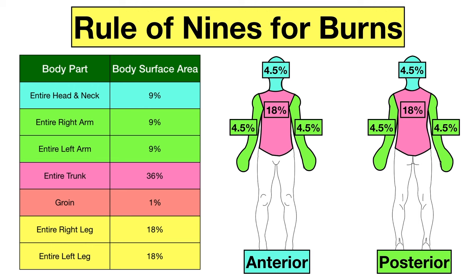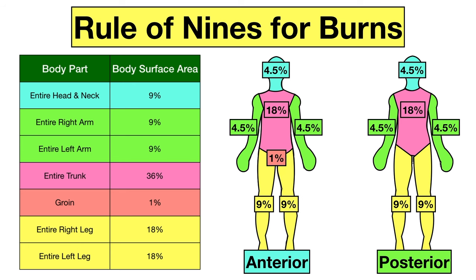The groin is 1%. The entire right leg has a body surface area of 18%, so the anterior side is 9% and the posterior side is 9%. The left leg is the same, where the anterior and posterior sides each make up 9%. Again, you can see how the percentages for the anterior and posterior sides are multiples of nine — hence the name rule of nines.